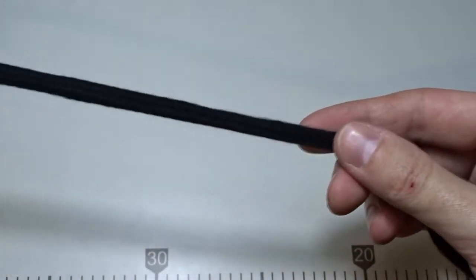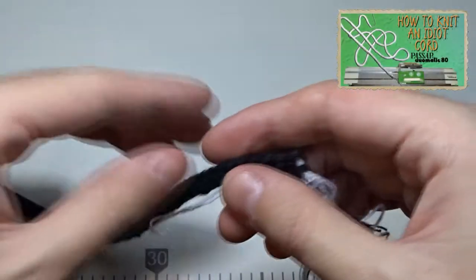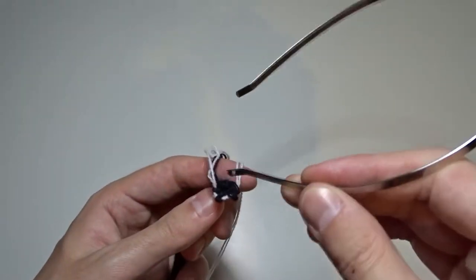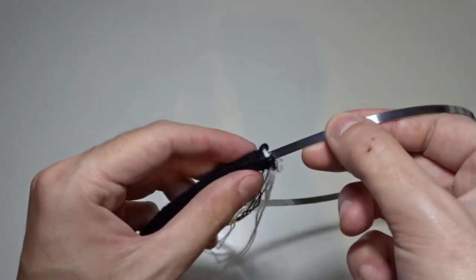When you sew off all stitches, it will look like this. Take the diadem and push it through the center of the eye cord.